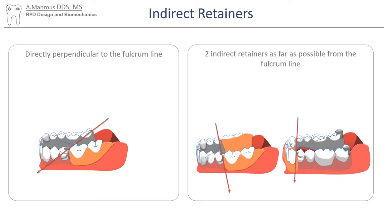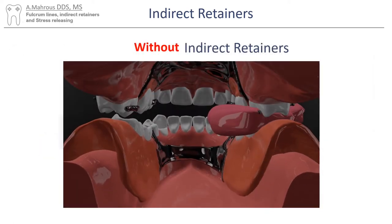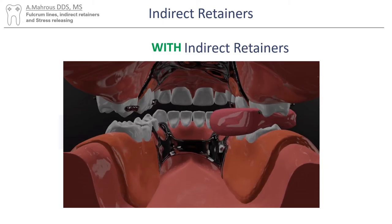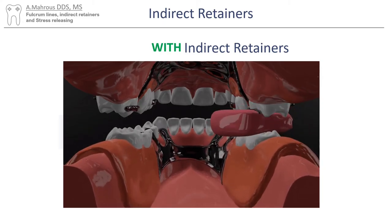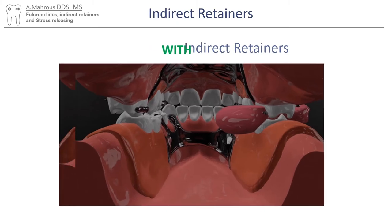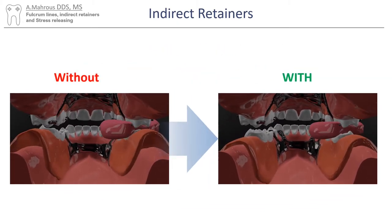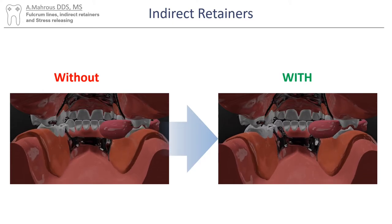Indirect retainers are placed as far away and as perpendicular as possible to the fulcrum line. Alternatively, two rests can be placed as far as possible from the fulcrum line if the perpendicular line falls on a weak tooth like an incisor, or goes distally into the patient's throat where there are obviously no teeth. Indirect retainers work to prevent movement of the partial denture away from the tissue by creating a hard tissue stop anterior to the fulcrum line. Notice the difference in movement with and without the indirect retainer as sticky foods act to pull the partial denture away from the tissue.